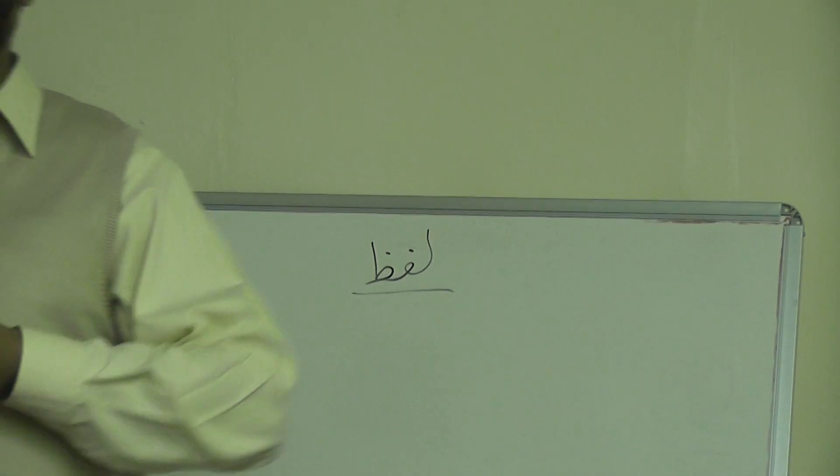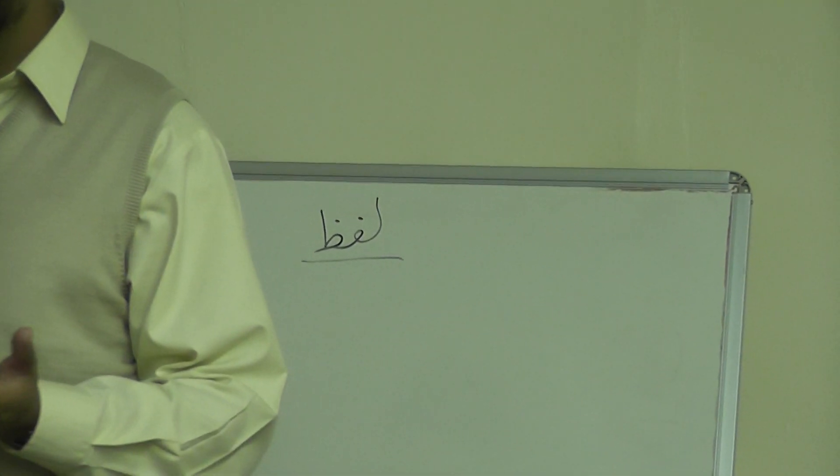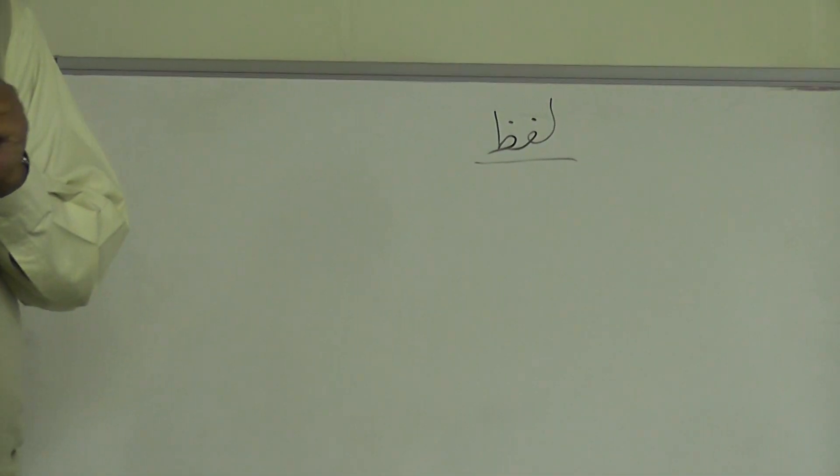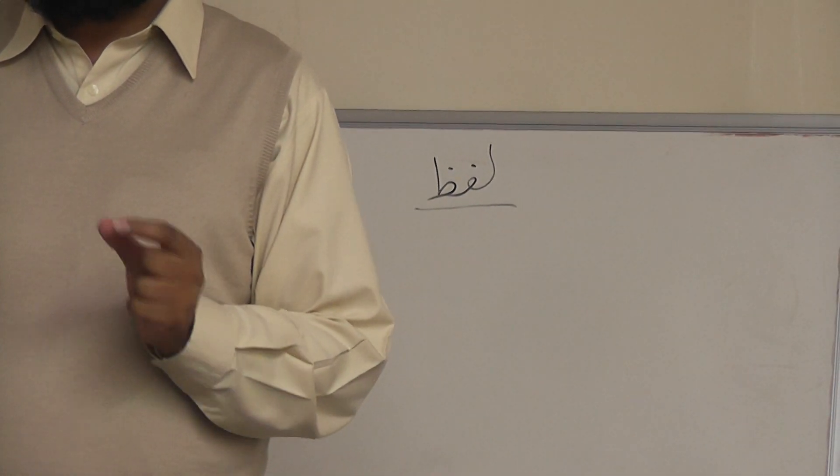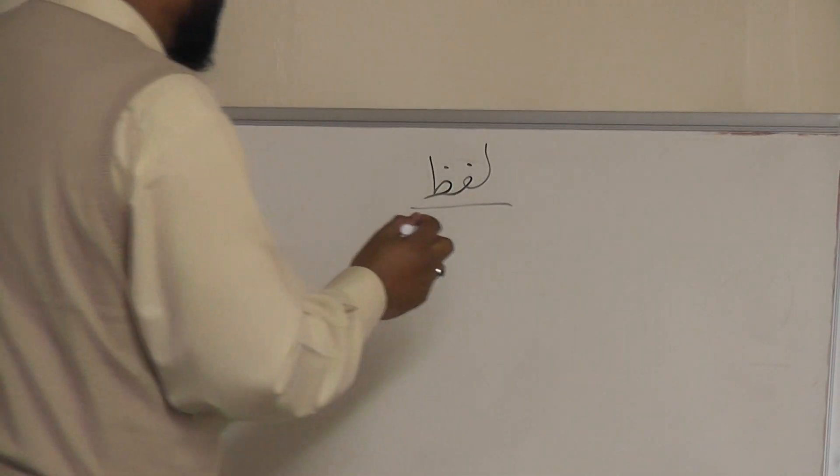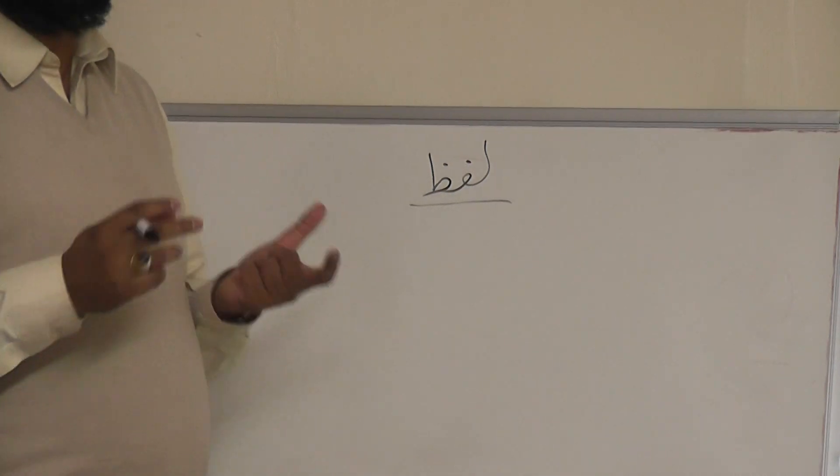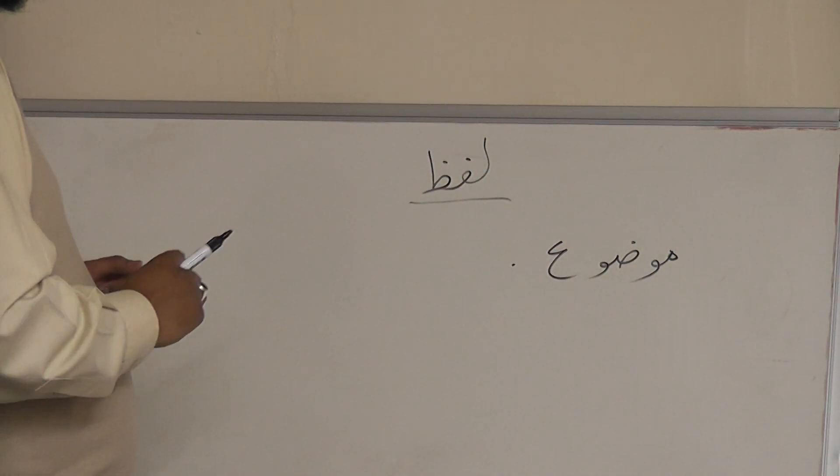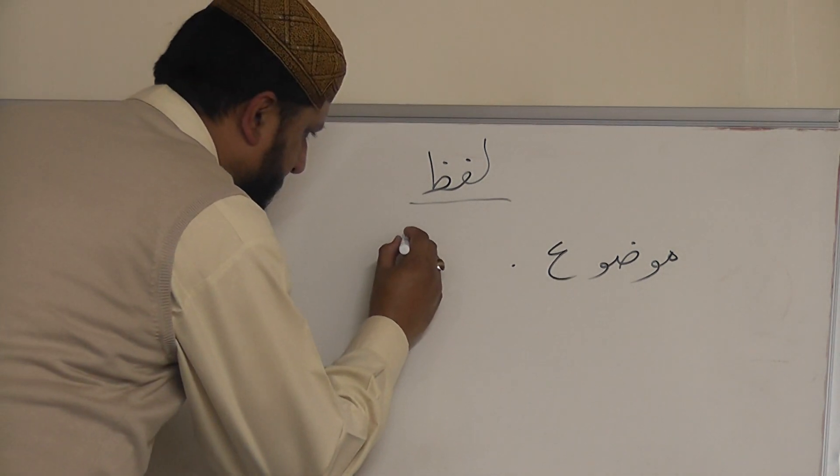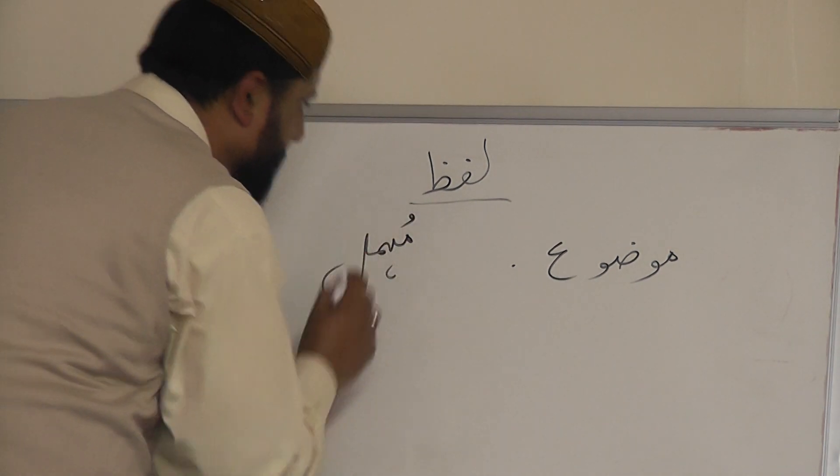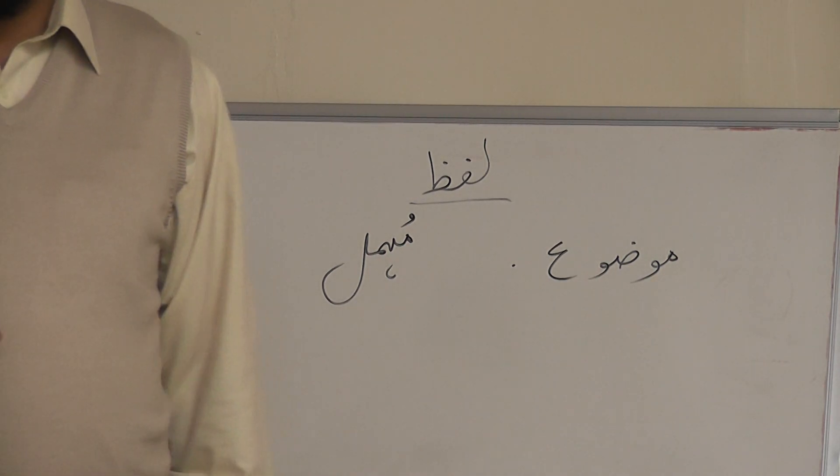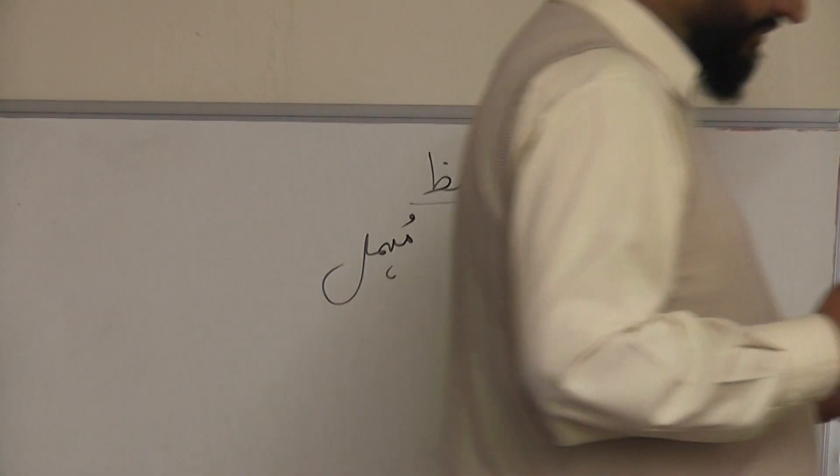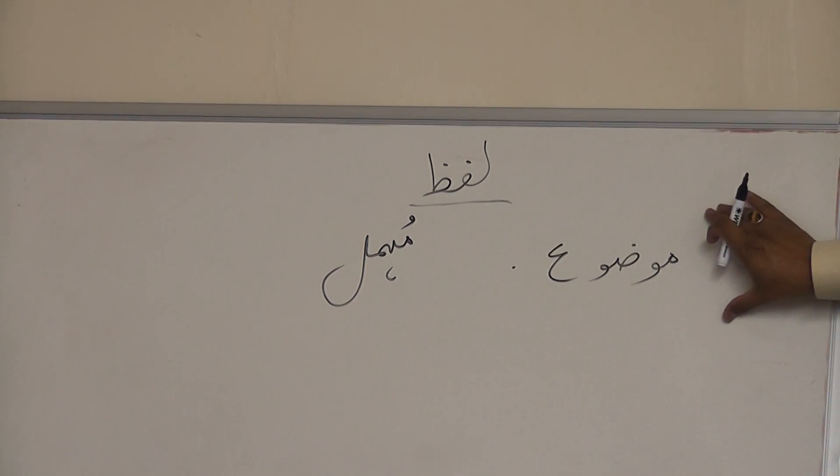Then LUFS can be meaningful or can be meaningless. So there are two types of LUFS. Meaningful is called BAMANA LUFS, meaningless is BEMANA LUFS. So meaningful word or LUFS is called MAUDU, and meaningless word is called MOHMAL.